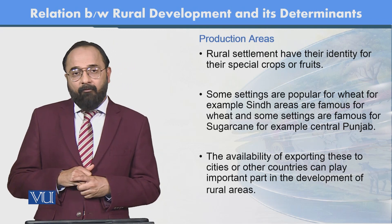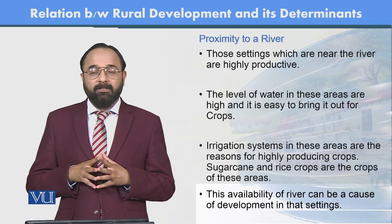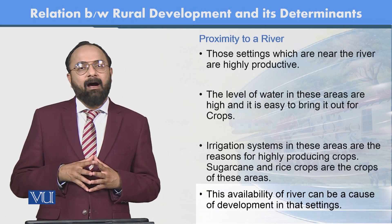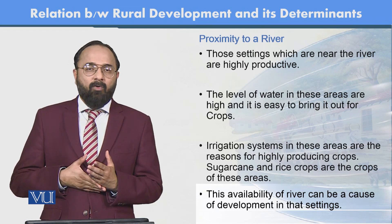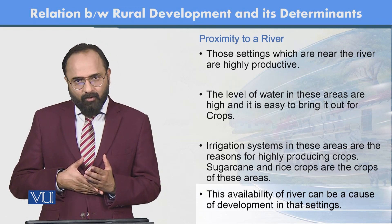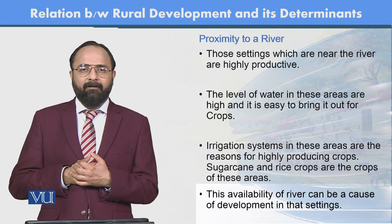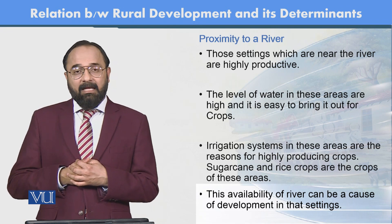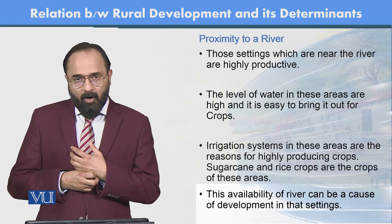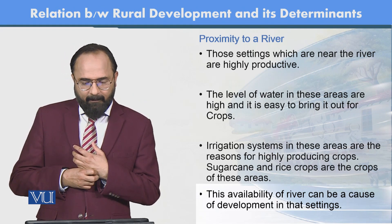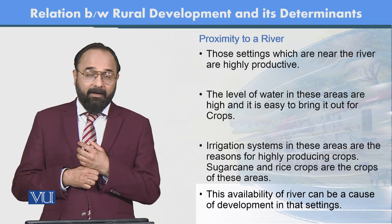Proximity to river بھی matter کرتی ہے — river side areas کی land زیادہ fertile ہوتی ہے، جبکہ river سے دور areas کے پانی کے اخراجات زیادہ ہوتے ہیں اور land کی productivity اتنی زیادہ نہیں ہو پاتی۔ ان علاقوں میں different قسم کی crops اگائی جاتی ہیں اور irrigation system بھی river کے قریب بہتر ہوتا ہے۔